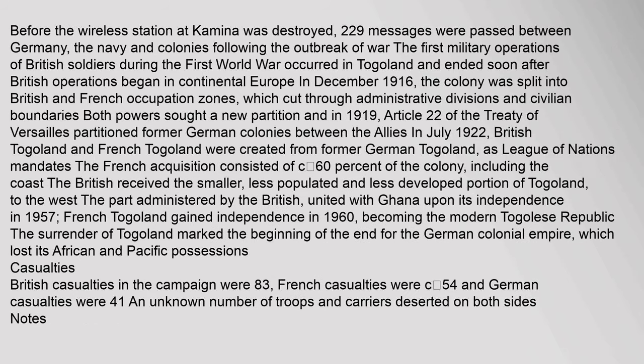Before the wireless station at Kamina was destroyed, 229 messages were passed between Germany, the navy, and colonies following the outbreak of war. The first military operations of British soldiers during the First World War occurred in Togoland and ended soon after British operations began in continental Europe. In December 1916, the colony was split into British and French occupation zones, which cut through administrative divisions and civilian boundaries. Both powers sought a new partition, and in 1919, Article 22 of the Treaty of Versailles partitioned former German colonies between the Allies.